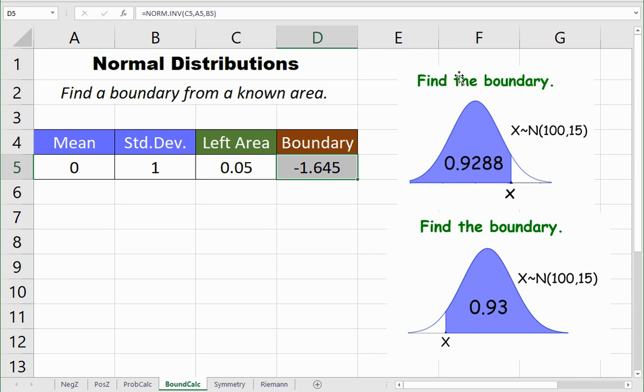What if we had a problem like this one that says find the boundary? We're looking for x and we're given this probability. That's a probability, an area to the left. So I'm going to put in the mean of 100, the standard deviation of 15. I'm getting that from this: x is normally distributed with a mean of 100 and standard deviation of 15. The area to the left of that boundary I'm looking for is 0.9288. These were for IQ scores, so that would be an IQ score of 122.